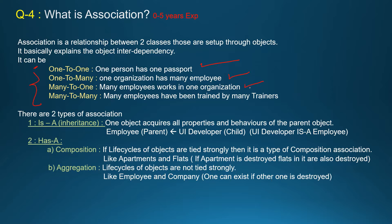Many-to-many: many employees have been trained under many trainers. Certain employees can be trained under Trainer One, and those same employees can also be trained under Trainer Two. Trainer Two can also be training other employees — so it is many-to-many. Association can also be defined in two different ways: is-a relationship or has-a relationship. The is-a association reflects the concept of inheritance, where one object acquires all the properties and behaviors of the parent object. For example, a UI Developer is also an Employee — that defines the is-a relationship.